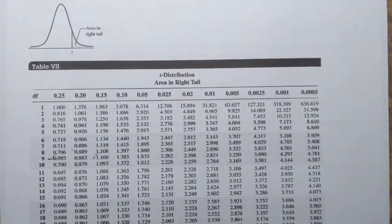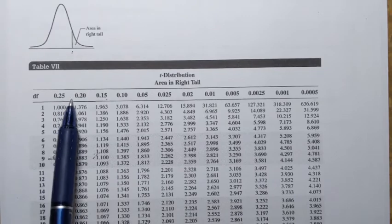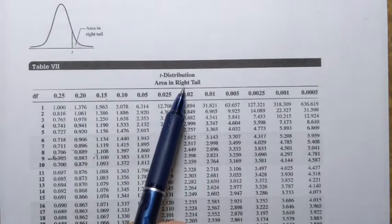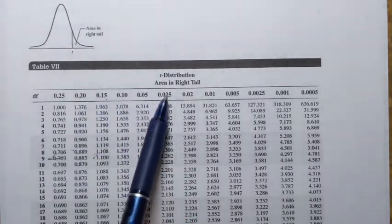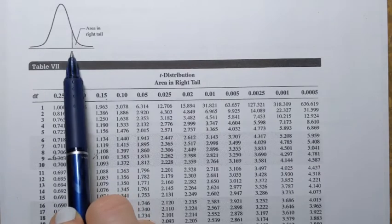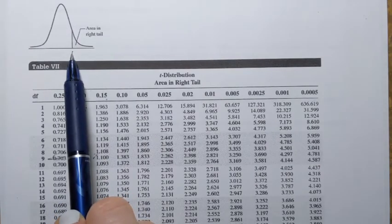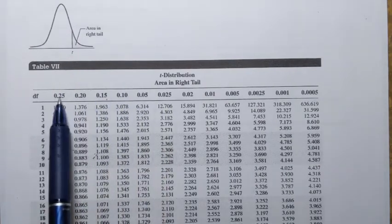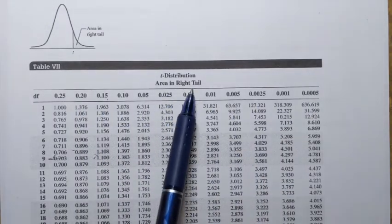How it's different from the z-table? Those areas are areas in the right tail. So there are areas to the right of the corresponding t-values. So that's one note. These are the areas to the right, areas in the right tail.